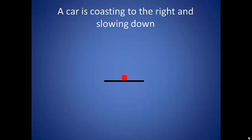So what if our car is coasting to the right and slowing down? We know that gravity is pulling it towards the Earth. However, the car is not falling, so the ground must be exerting an equal magnitude normal force upwards to keep it in place.